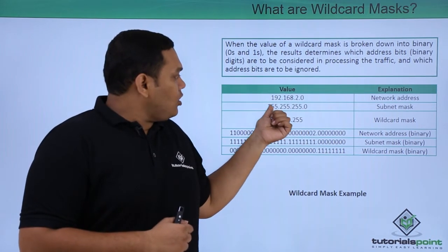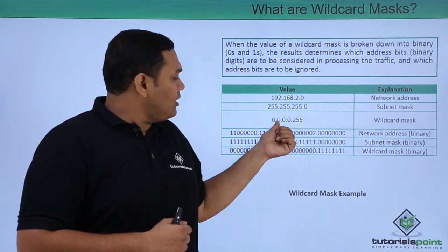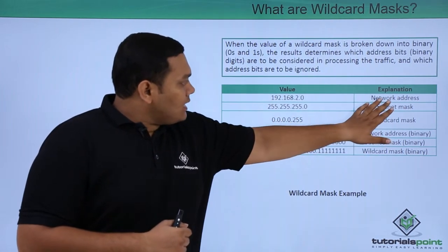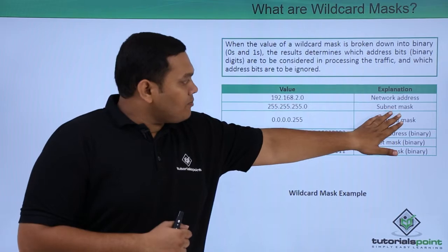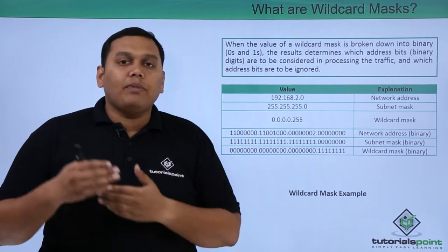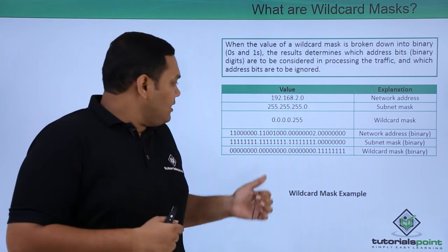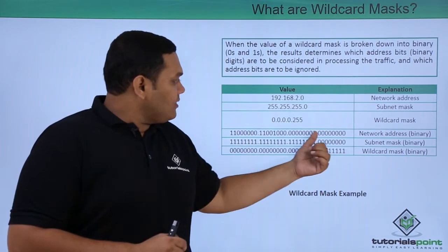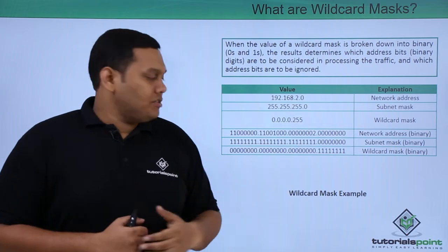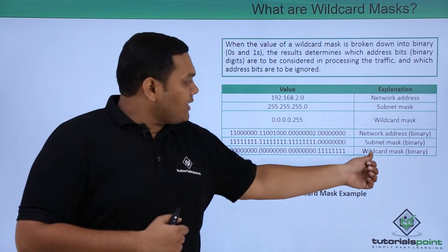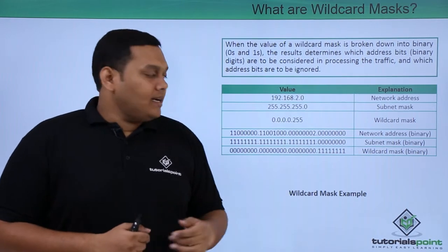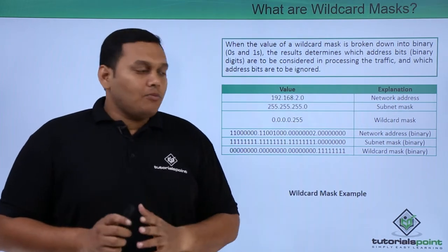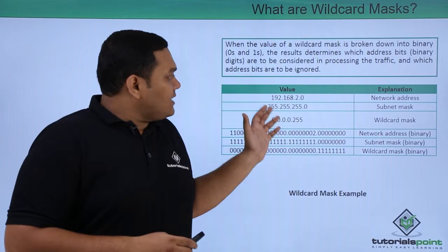The wildcard mask simply replaces all 255s with 0 and all 0s with 255. Converting the network address, subnet mask, and wildcard mask into binary format — all into 0s and 1s — is shown clearly: this is the binary format for the network address, this for the subnet mask, and this for the wildcard mask.